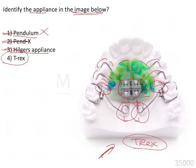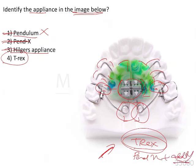What you might fail to notice if you are in a hurry are these additional wire components that run from the acrylic onto the molar bands. The presence of these wire components is what makes it the T-Rex appliance, because the T-Rex appliance is basically a pendex appliance with these additional wire components.